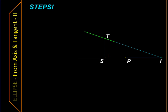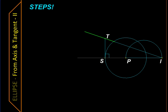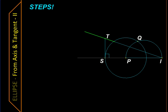Then we draw a circle with P as the center — the vertex as the center — and the foot of the perpendicular S as the point on the circle, so SP becomes its radius. Then we draw a semicircle with PI as the diameter. As you might have guessed from this circle and semicircle, we are going to construct a tangent. We take point Q, the point of intersection of the semicircle and the circle.